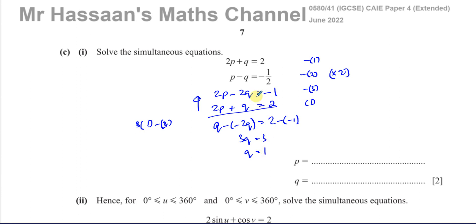If we look for p, p minus 1 equals minus 1 half, so p is minus 1 half plus 1, which equals 1 half. So p equals 1 half and q equals 1. We can check our answer. If I multiply 2 by 1 half, I get 1. 1 plus 1 is 2. And p minus q, 1 half minus 1, gives minus 1 half.